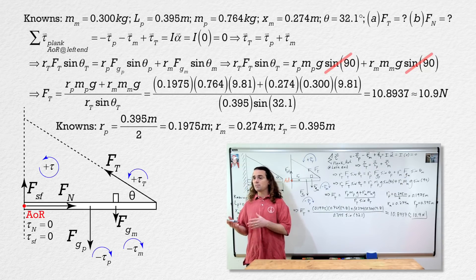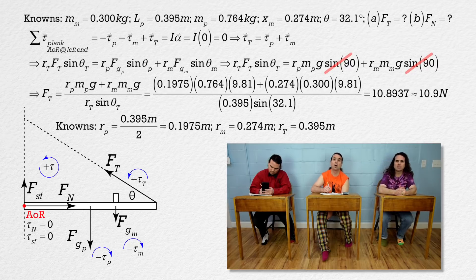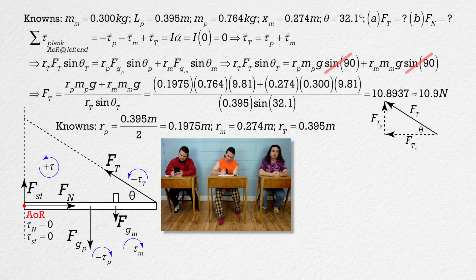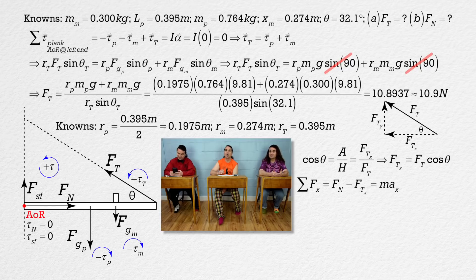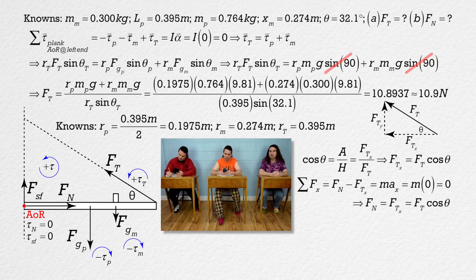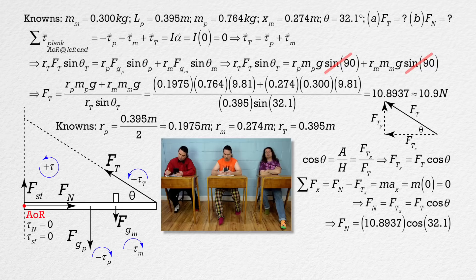Great. Bo, please solve for the force normal from the wall on the plank. Sure. We need to first determine the force of tension in the x direction. Cosine of theta equals adjacent over hypotenuse, so the force of tension in the x direction equals force of tension times cosine of theta. The net force in the x direction equals force normal minus force of tension in the x direction. The plank is not accelerating, so net force equals zero. That means force normal equals force of tension times cosine theta, or 10.8937 times cosine of 32.1 degrees, which equals 9.2283, or 9.23 newtons with three significant figures.